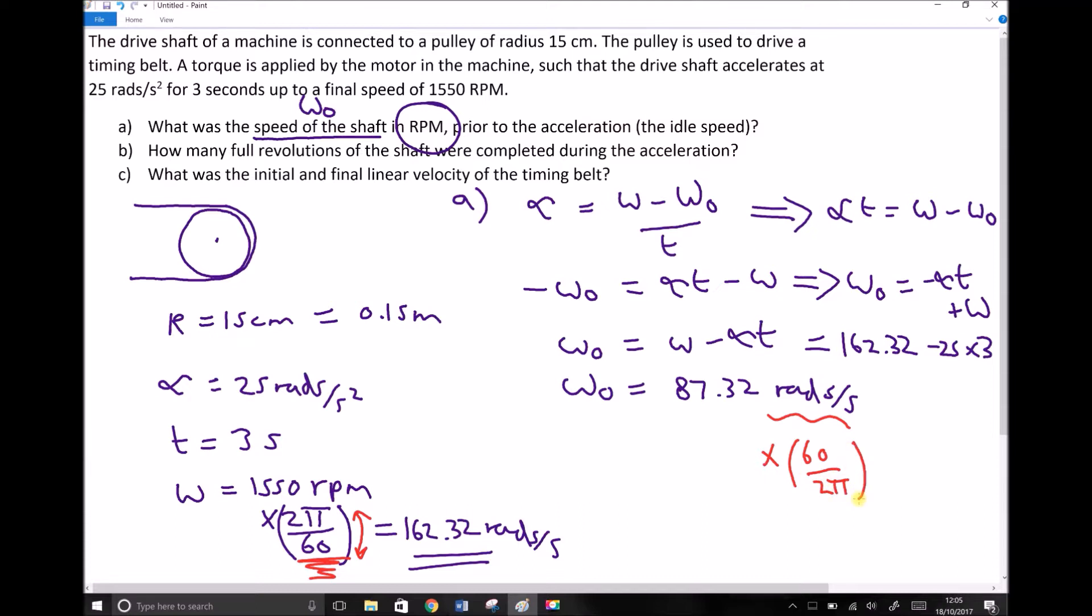And 87.32 times 60 over 2 pi gives us a speed in revolutions per minute of 833.80 rpm.